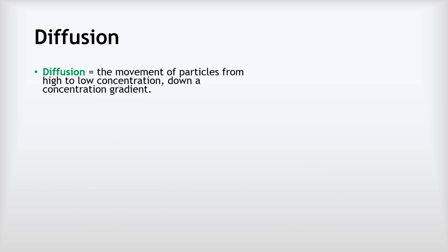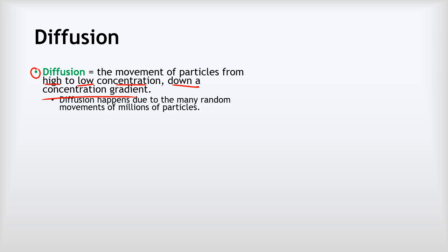Diffusion is the movement of particles from high concentration to low concentration down the concentration gradient — that's our fancy way of saying from high to low concentration. Diffusion happens as a result of the many random movements of millions and billions of particles. The point is that it's not that the particles are repelling each other; there's no mysterious force pushing them apart. It just occurs due to millions of motions and collisions of millions of individual particles.